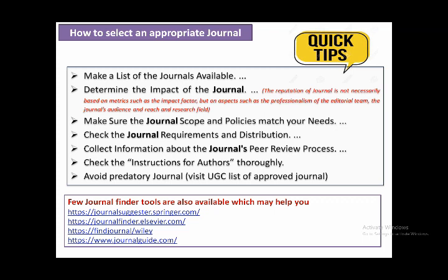Now, how to select an appropriate journal. First, make a list of available journals. Determine the impact of the journal — the reputation is not necessarily based solely on the impact factor, but also on aspects such as the professionalism of the editorial team, the journal's audience, and research field. Find out which area your work belongs to and which journals are considered best in that area. Make sure the journal's scope and policies match your needs. Check the journal requirements and collect information about the peer review process — all this information is available on the journal's homepage.